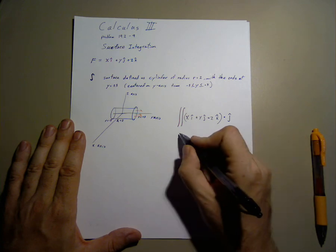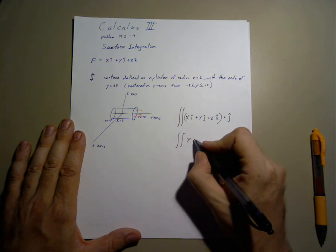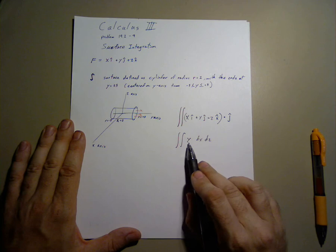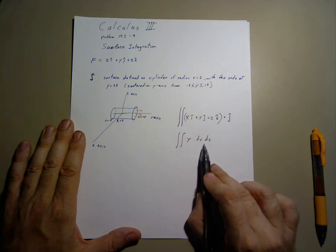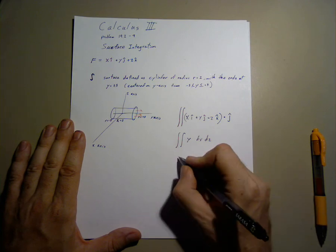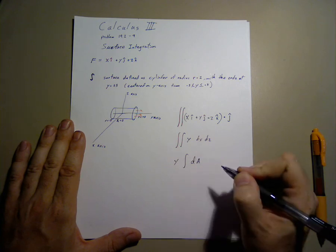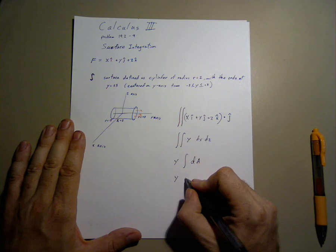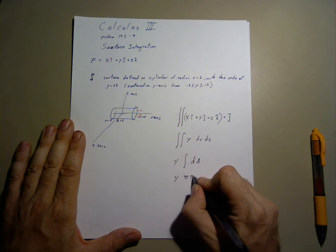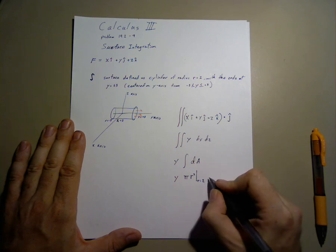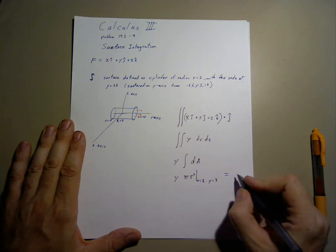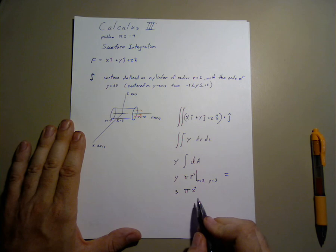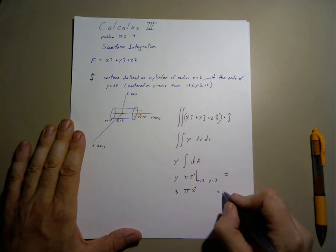The dot product simplifies the situation, leaving us with just y integrated dx dz. At this point, since our variable and our variables of integration are different, we can simply evaluate this as y dA where the area is y times pi r squared. With r equals 2, y equals 3, we get a value of 3 pi times 2 squared, which gives us 12 pi.